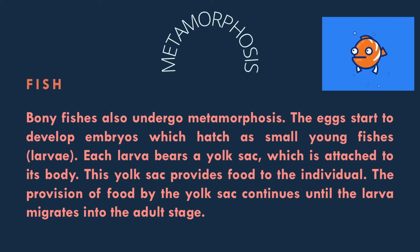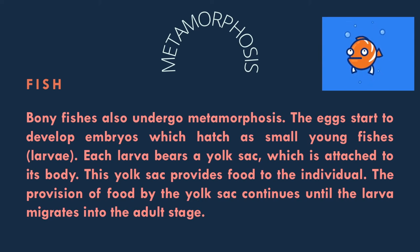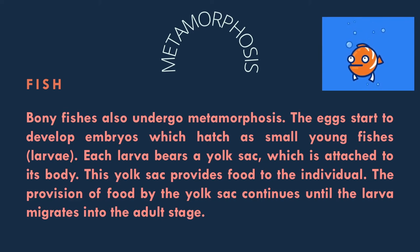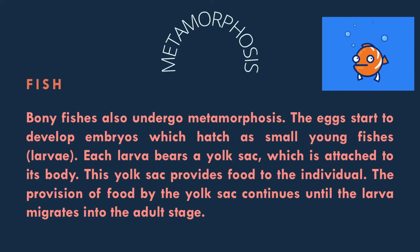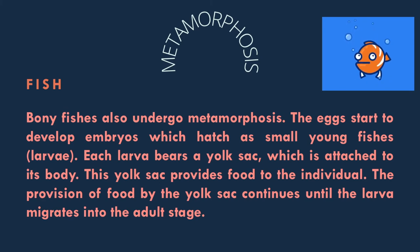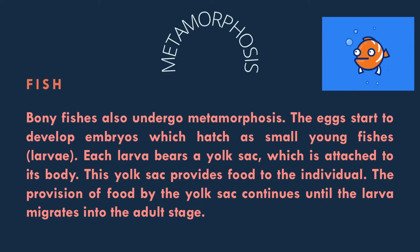Bony fishes like tilapia or carp also undergo metamorphosis. The eggs start to develop embryos which hatch as small young fishes or larvae. Each larva bears a yolk sac which is attached to its body, providing food to the individual. The provision of food by the yolk sac continues until the larva migrates into the adult stage, at which point the yolk sac disappears because the now-adult fish is able to fend for itself.